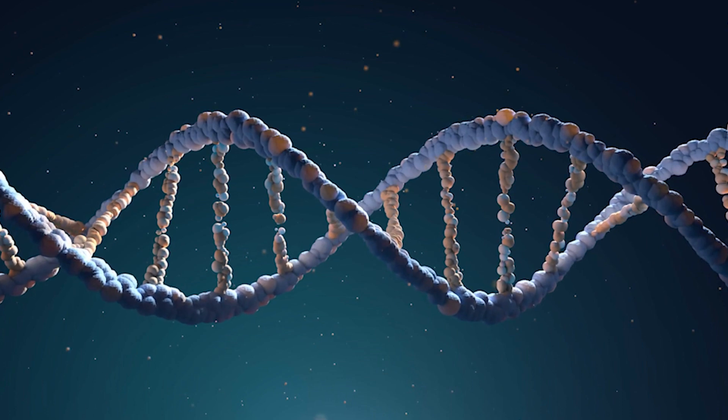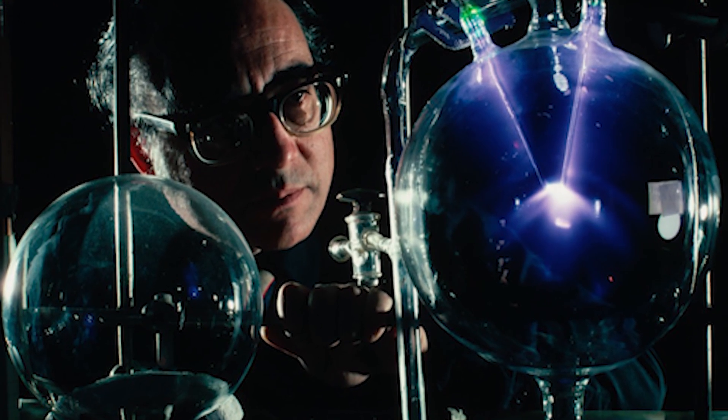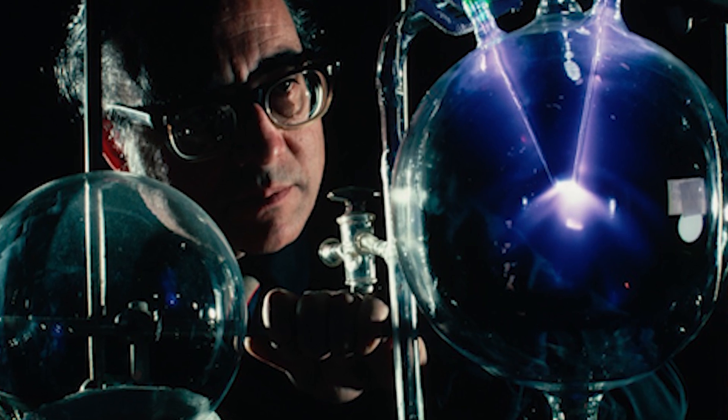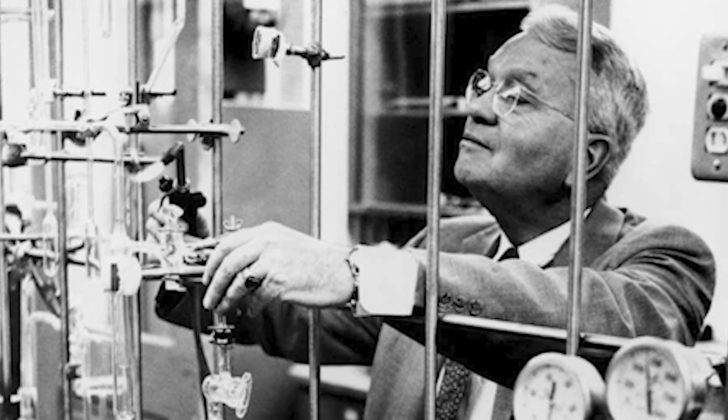In 1952, a graduate student named Stanley Miller, just 22 years old, designed an experiment to test whether the amino acids that form proteins could be created under the conditions thought to exist on primordial Earth. He and his thesis advisor simulated the conditions of early Earth by sealing water, methane, ammonia, and hydrogen in a 5-liter glass flask.